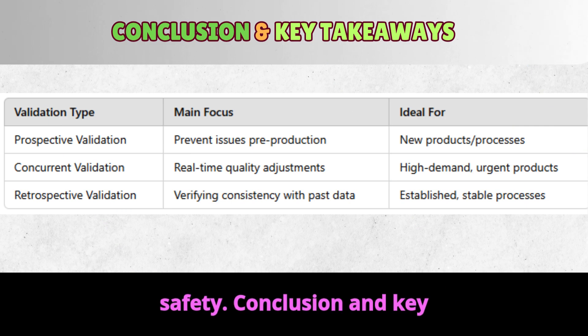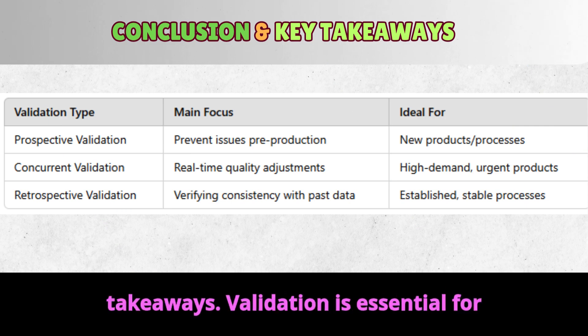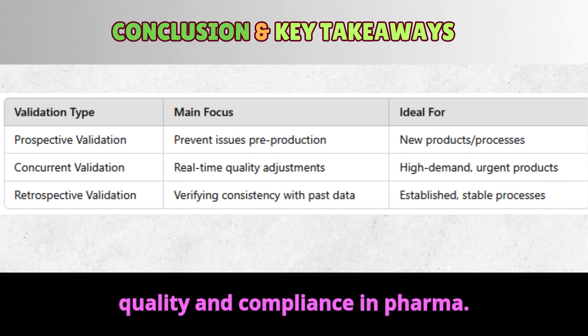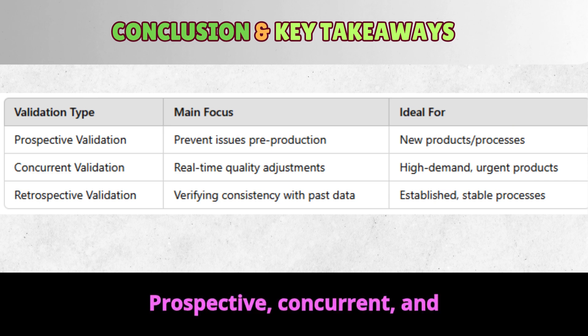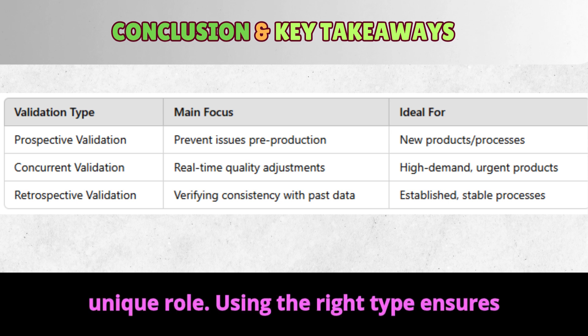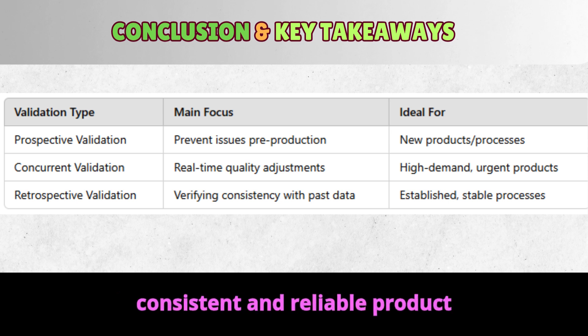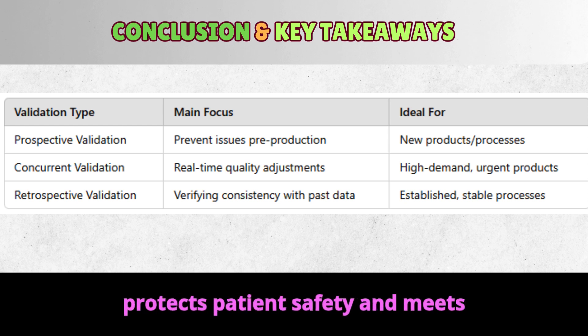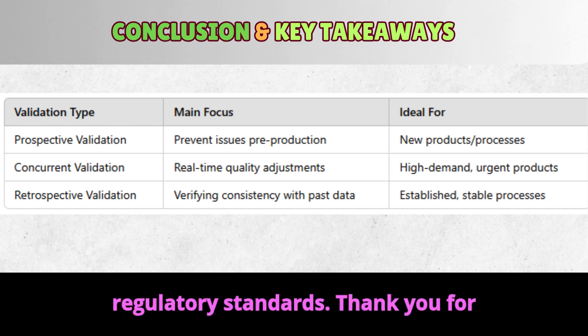Conclusion and key takeaways. Validation is essential for quality and compliance in pharma. Prospective, concurrent, and retrospective validation each play a unique role. Using the right type ensures consistent and reliable product manufacturing. Effective validation protects patient safety and meets regulatory standards.